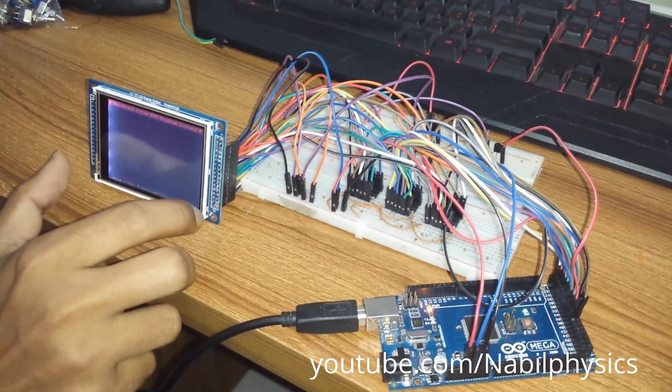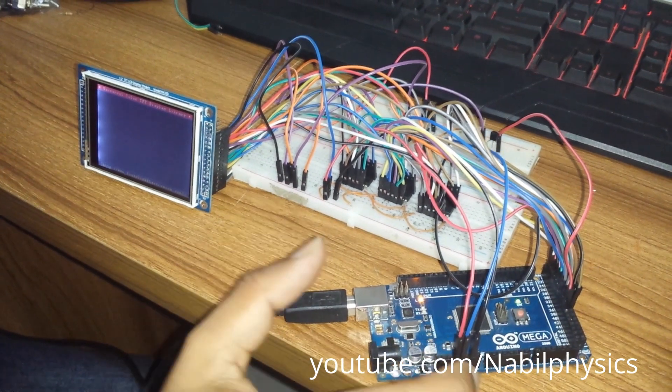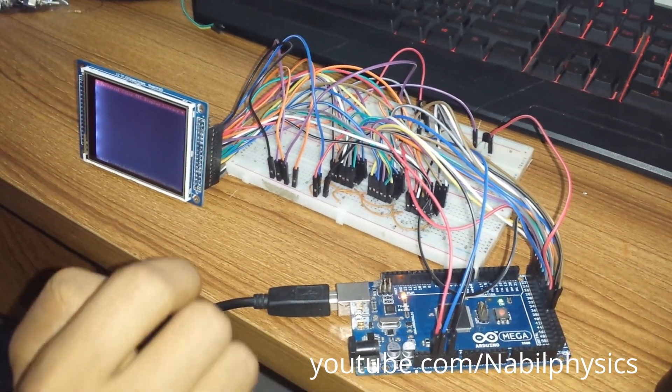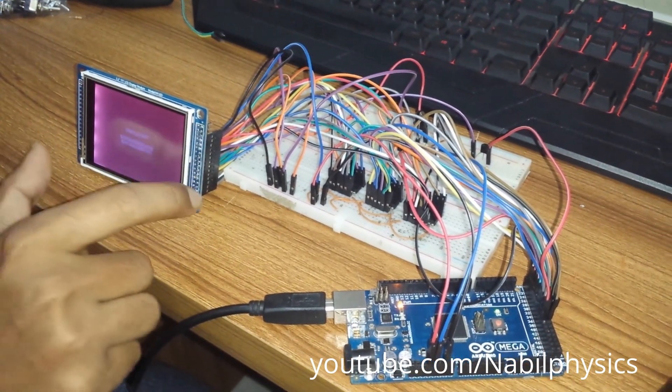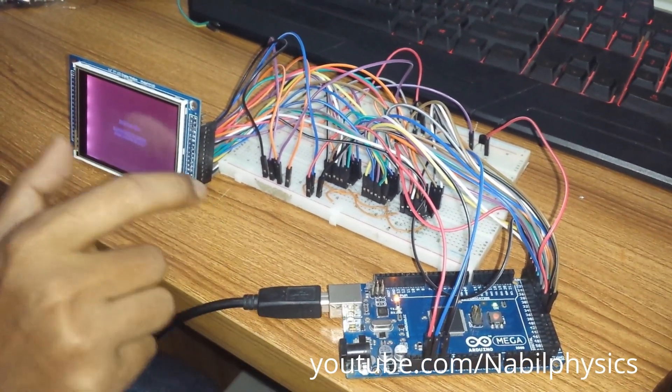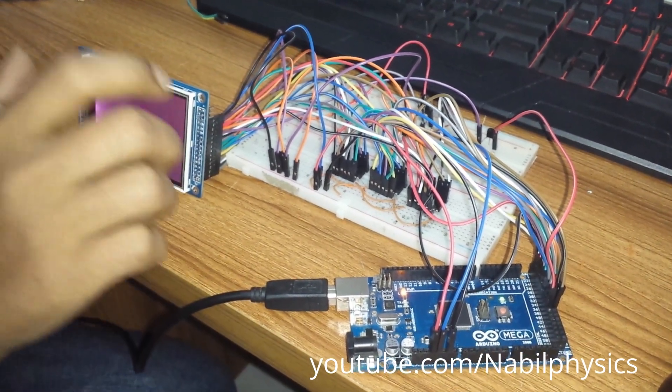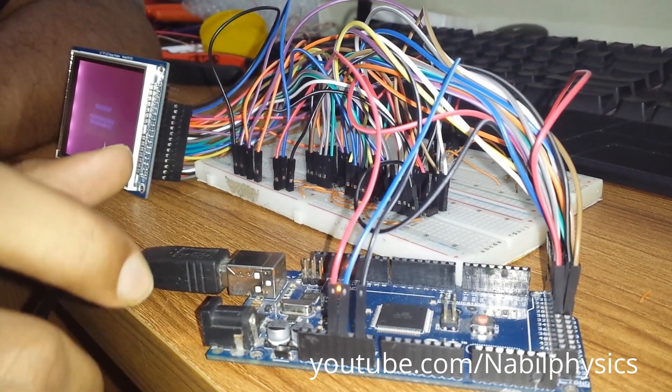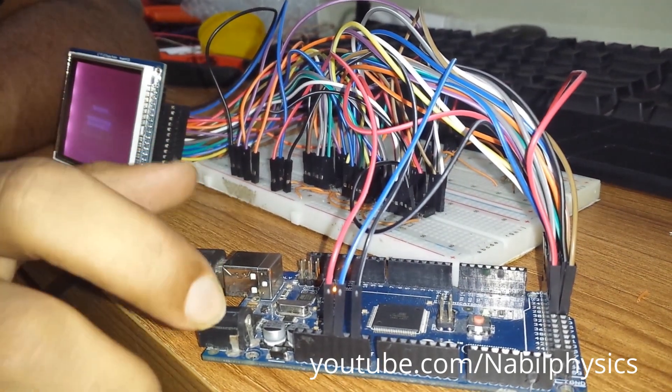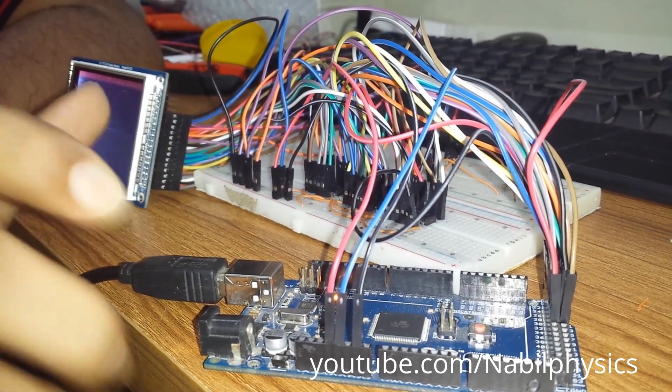Today I am going to show you how we can connect a 3.3 volt TFT display with a 5 volt operated Arduino. Normally people use TFT Arduino shield for connecting TFT displays with Arduino, but these shields are too much costly. So I am going to show you how we can connect a 5 volt Arduino with a 3.3 volt TFT display by using voltage level shifting IC.